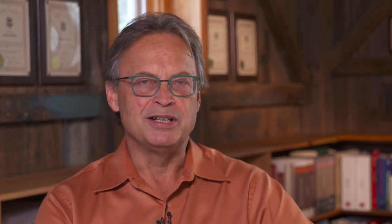It sounds like a crazy place to start — what is a building? Well, a building is a different thing to different groups. To an engineer who practices building physics, a building is an environmental separator: it keeps the outside out and the inside in. To many architects, we want to connect the inside to the outside and the outside to the inside. And so right off the bat, we sometimes have a dysfunctional relationship.